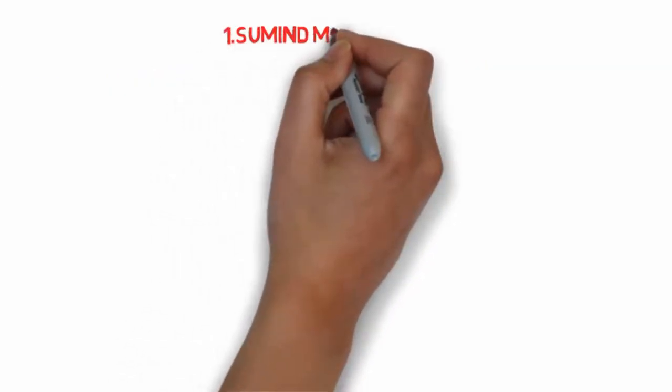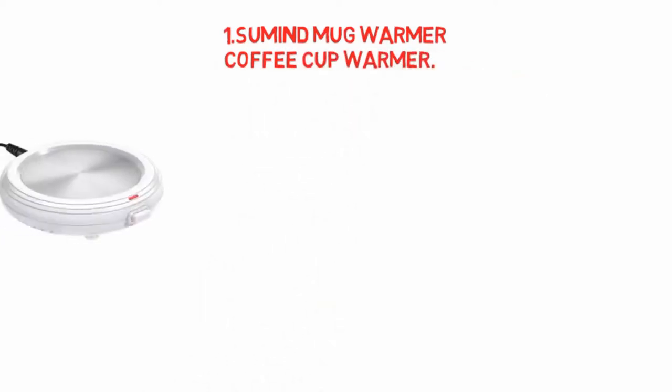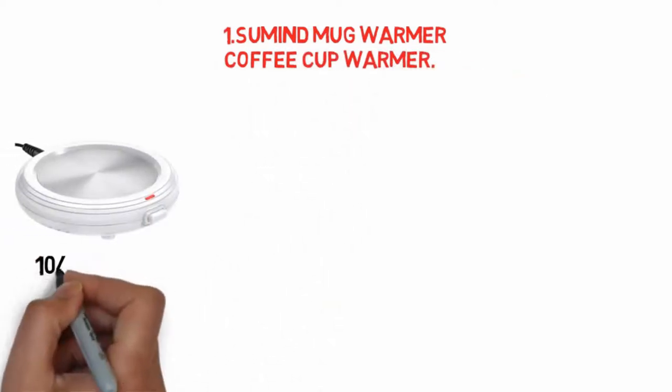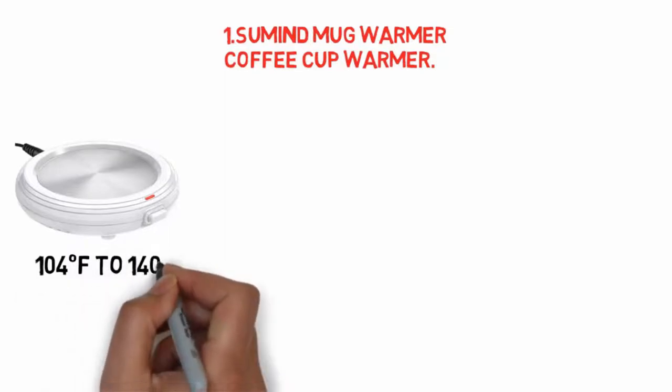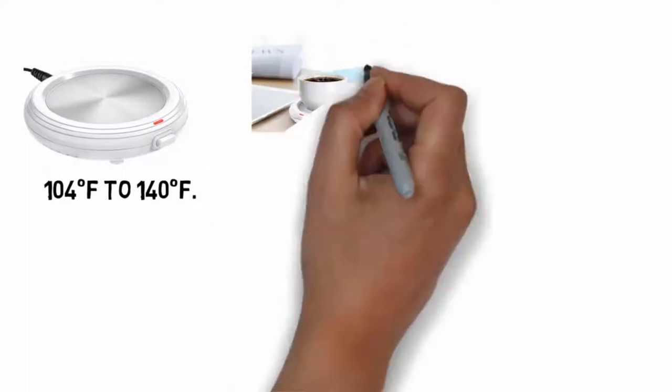Starting at number one: Mind Mug Warmer Coffee Cup Warmer. The mug warmer comes in two different colors. It can keep your beverage between 104 degrees Fahrenheit to 140 degrees Fahrenheit. It is suitable for coffee as well as other hot drinks.